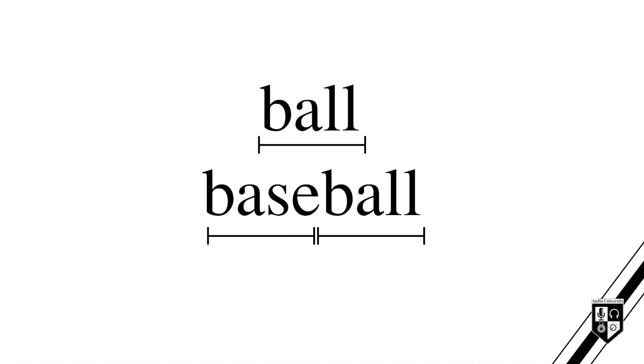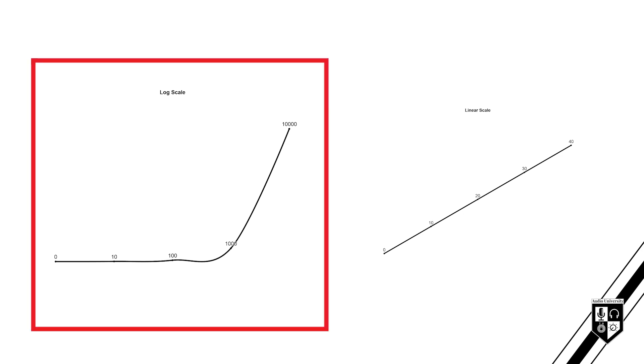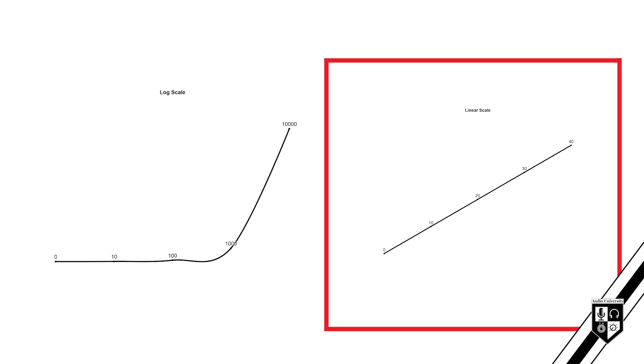Most of us are accustomed to thinking in linear terms. For instance, twice as many letters produce a word that's twice as long. This mode of thinking, however, does not hold true for the way humans perceive loudness. Thinking in linear terms, you might suspect that twice the amplifier power produces a sound that's twice as loud. This is not the case. The way humans perceive loudness is more similar to a logarithmic scale than a linear scale.